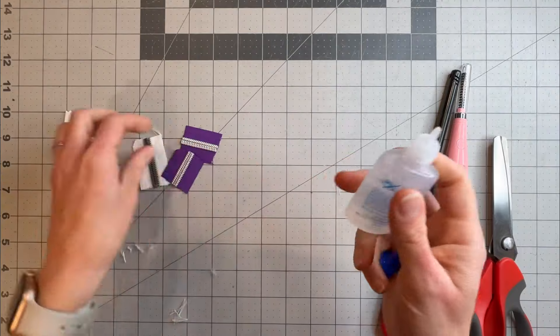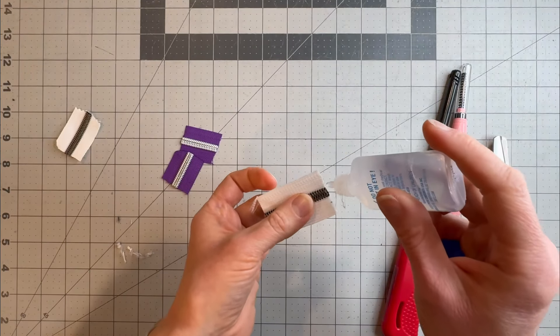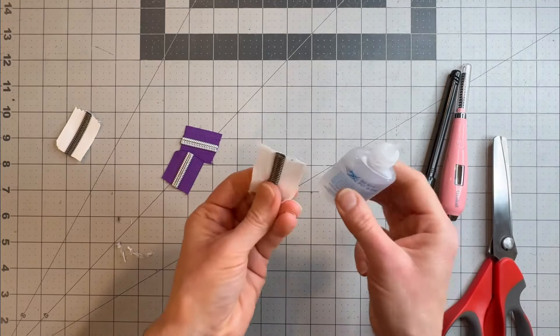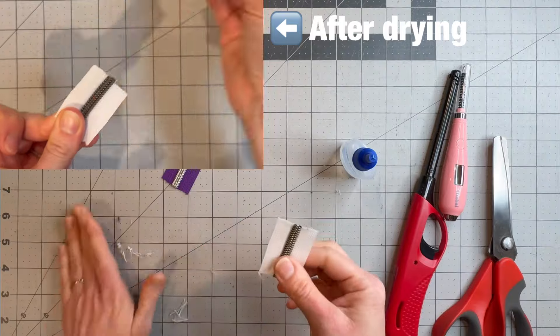Or if you wanted to use fray check, you can put that on the end, and once that dries, that's also not going to fray and shed.